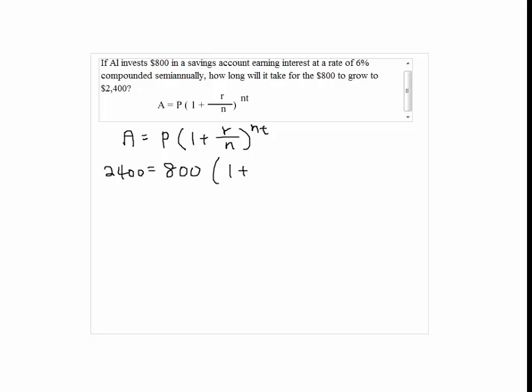And 1 plus R which is 6% will be 0.06 in decimal over N which is the number of compounds, so it will be semi-annually, so it will be twice a year, and to the 2T.